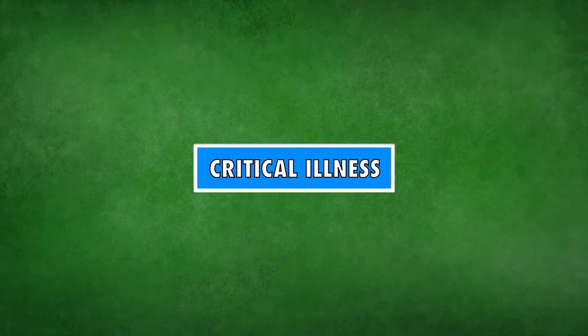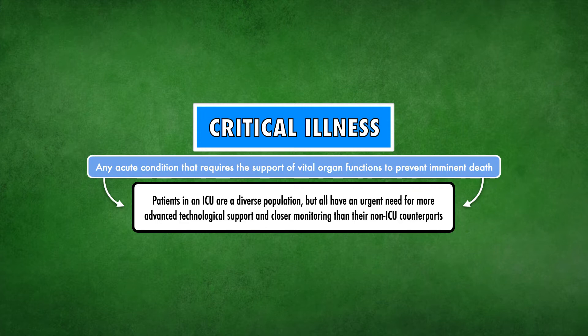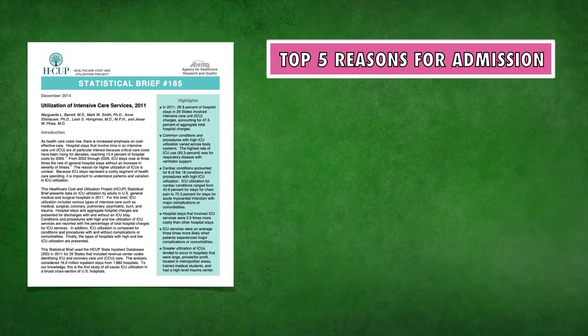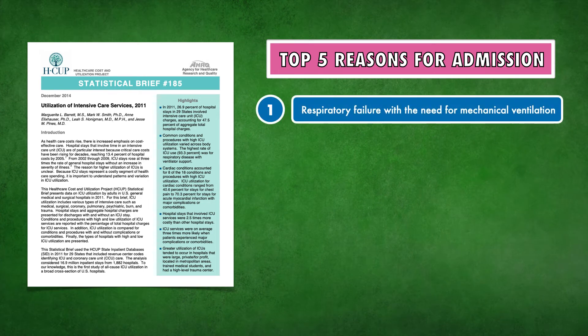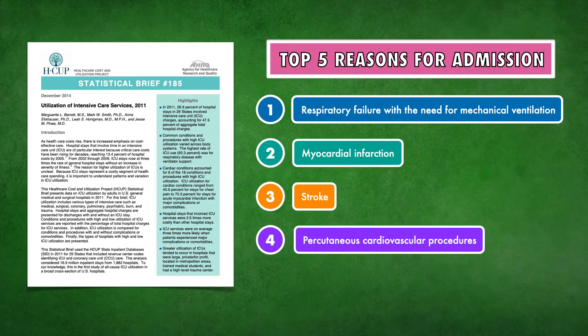This is because it isn't one condition. Instead, it can be any acute condition that requires the support of vital organ functions to prevent imminent death. Thus, patients in an ICU are a diverse population, but all have an urgent need for more advanced technological support and closer monitoring than their non-ICU counterparts. According to data from the Healthcare Cost and Utilization Project, the top five reasons patients are admitted to an ICU are respiratory failure with the need for mechanical ventilation, myocardial infarction, stroke, percutaneous cardiovascular procedures, and sepsis.